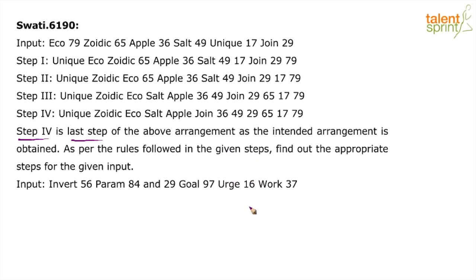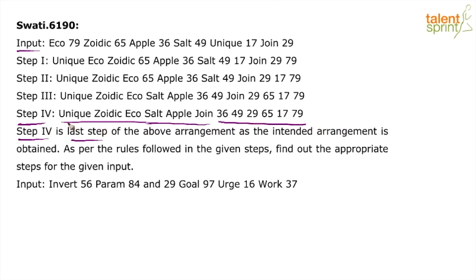The first step in machine input-output is to look at the last step. One observation is that all the words and numbers remain the same throughout the process — it is just their positions that have been changed. We have the same set of words: unique, zoidec, echo, salt, apple, joint; and the numbers: 36, 49, 29, 65, 17, 79. One very clear observation is that all words have been brought to the front and all numbers have been taken to the end. We need to identify the logic within the words and within the numbers.